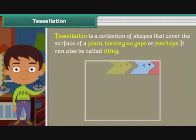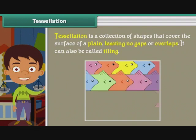Tessellation. Tessellation is a collection of shapes that cover the surface of a plane leaving no gaps or overlaps. It can also be called tiling.